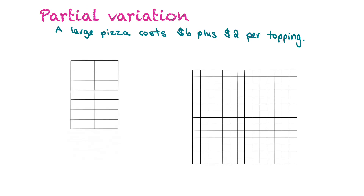Now we're going to take a look at partial variation. With partial variation, our graph is not going to pass through the origin. Instead, it's going to hit the y-axis somewhere because there's going to be an initial value involved. In this example, we're going to say that a large pizza costs six dollars plus two dollars for every topping.